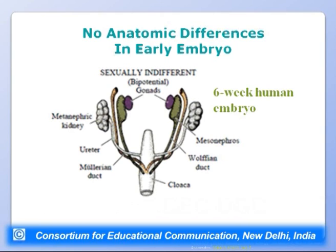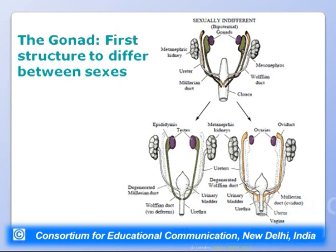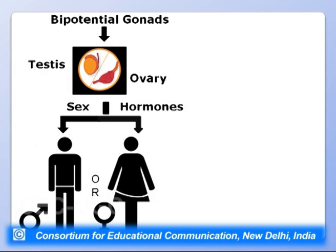The six-week human embryo is sexually indifferent. The gonad is the first structure to differentiate between sexes — around eight to nine weeks in males and around 14 weeks in females. Testes develop in males and ovaries in females, followed by development of all other sex-specific structures and disappearance of common embryonic structures.